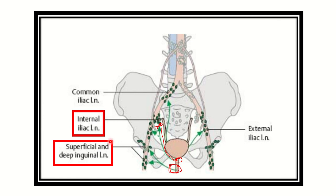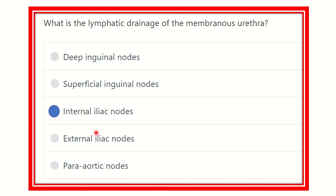The membranous part drains into the internal iliac lymph nodes because it is located in the inner part of the pelvis. So our answer is the internal iliac lymph node group — that is the lymphatic drainage of the membranous urethra. The other options are not compatible. To summarize, the penile urethra drains into the superficial and deep inguinal lymph nodes. Thank you.